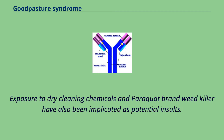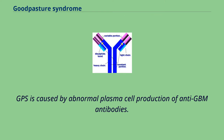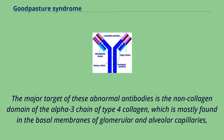Exposure to dry-cleaning chemicals and paraquat brand weed killer have also been implicated as potential insults. In GPS, anti-GBM antibodies are produced and circulated throughout the bloodstream, damaging the membranes lining the lungs and kidneys as well as targeting their capillaries. GPS is caused by abnormal plasma cell production of anti-GBM antibodies, and the major target of these abnormal antibodies is the non-collagen domain of the alpha-3 chain of type 4 collagen, which is mostly found in the basal membranes of glomerular and alveolar capillaries.